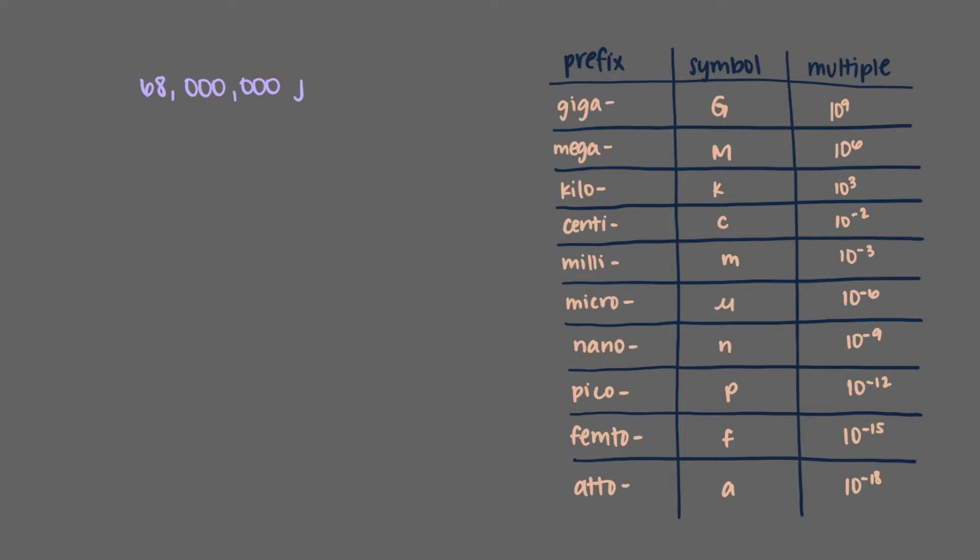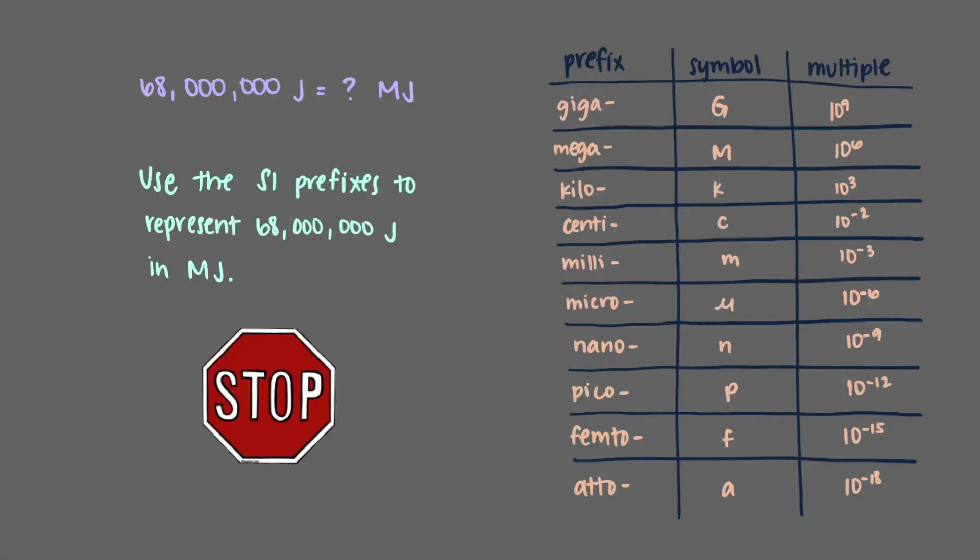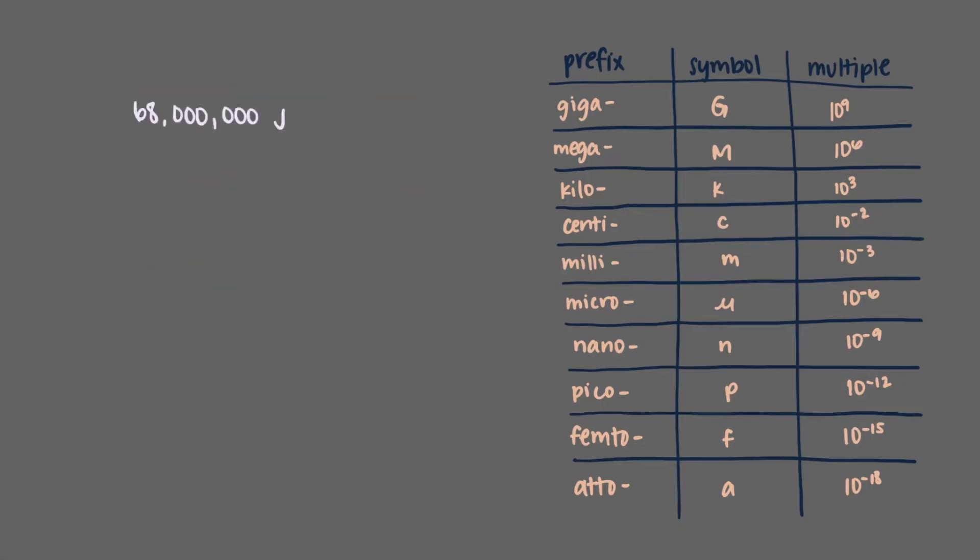Let's say we have 68 million joules of energy. This is a big number, so it may make more sense for us to express this value in megajoules. Use the SI prefixes to represent 68 million joules in megajoules. We'll start with the 68 million joules. That's what we're studying. Our table tells us that anything with a mega prefix is a multiple of 1 million. This means that there are 1 million joules per 1 megajoule. Now be careful, there are two different ways we might try to write this conversion. Notice here that the joules are in the top and bottom, and so they cancel out. This one's correct.